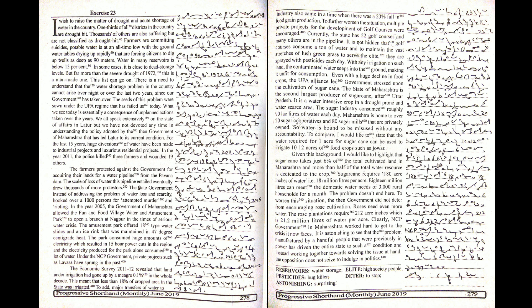In the year 2011, the police killed three farmers and wounded 19 others. The farmers protested against the government for acquiring their lands for a water pipeline from the Pavana Dam. The scale of loss of water this pipeline entailed eventually drew thousands of more protesters.